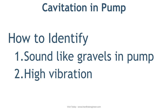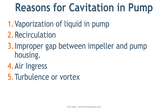Now you know what cavitation is. You should also know why it happens in a pump. There are five main reasons that lead to cavitation. The first is vaporization of liquid in the pump — this is the biggest reason. As explained, if the pressure inside the pump falls below the vapor pressure, the liquid starts boiling and creates vapors. To eliminate this, you have to keep enough head at the pump suction.